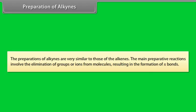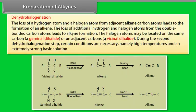Preparation of alkynes: the preparations of alkynes are very similar to those of alkenes. The main preparative reactions involve the elimination of groups or ions from molecules, resulting in the formation of pi bonds. Dehydrohalogenation: the loss of a hydrogen atom and a halogen atom from adjacent alkene carbon atoms leads to the formation of an alkene. The loss of additional hydrogen and halogen atoms from the double-bonded carbon atoms leads to alkyne formation. The halogen atoms may be located on the same carbon — a geminal dihalide — or on adjacent carbons — a vicinal dihalide.